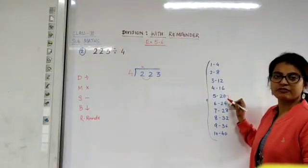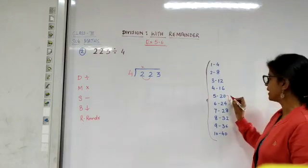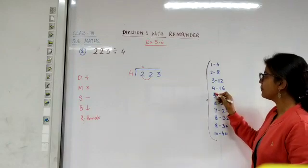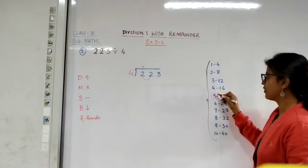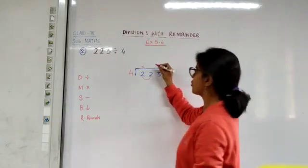24 or 20, which number shall we choose? Yes, we choose the smaller number, that is 20. So children, the quotient will be the number at which 4 when multiplied by 5 is 20. So 5 is our first quotient.